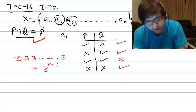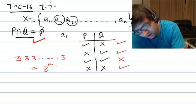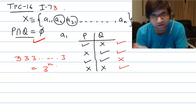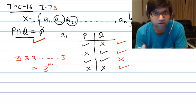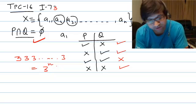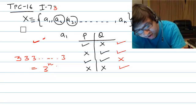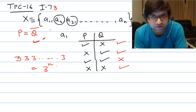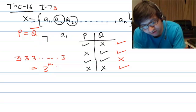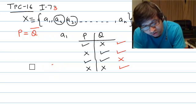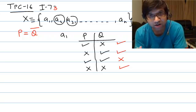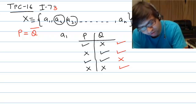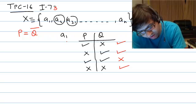Looking at Illustration 73, the question type is the same — set X is given with n elements, all different, and we form subsets P and Q. This time, instead of P intersection Q equal to φ, we must find the number of ways to form P and Q such that P equals Q complement. This means P and Q are complementary sets: elements not in P must be in Q, and elements not in Q must be in P — so all elements are present in either P or Q, but not both.